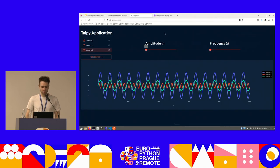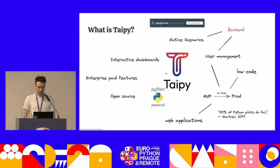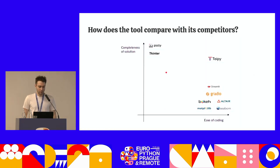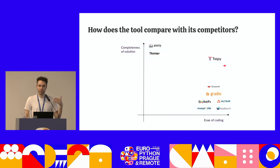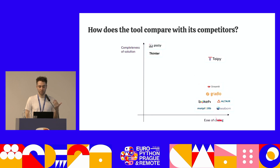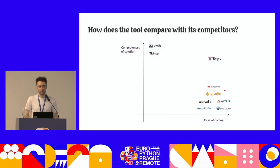Let's go back to the presentation. This graph — which Type-I has produced in other talks — shows that Type-I is in a sweet spot: you get a lot of features while having a low learning curve. By comparison, popular libraries such as Plotly offer many features but the learning curve is quite high. And if you use Streamlit in production, you can get started easily but you don't scale, and you cannot benefit from back-end features such as native scenarios or user management.